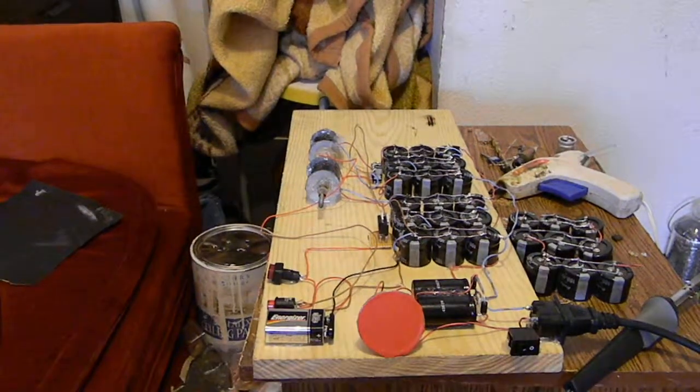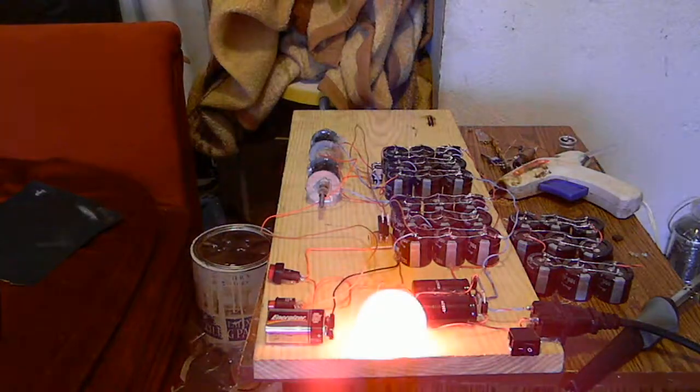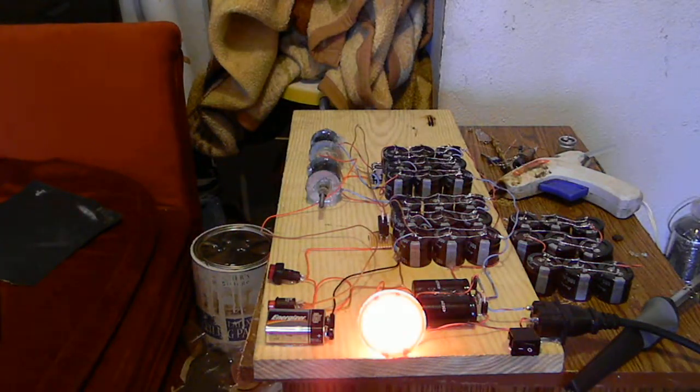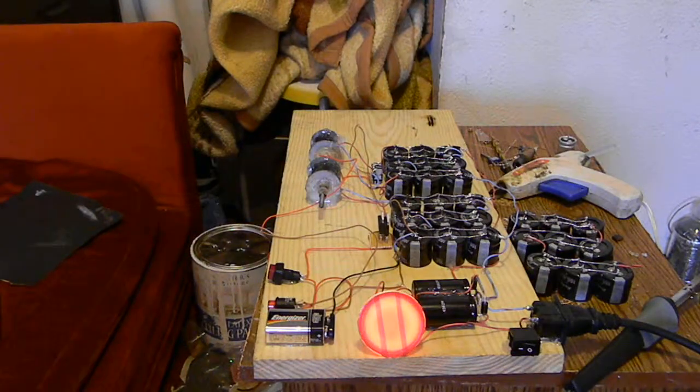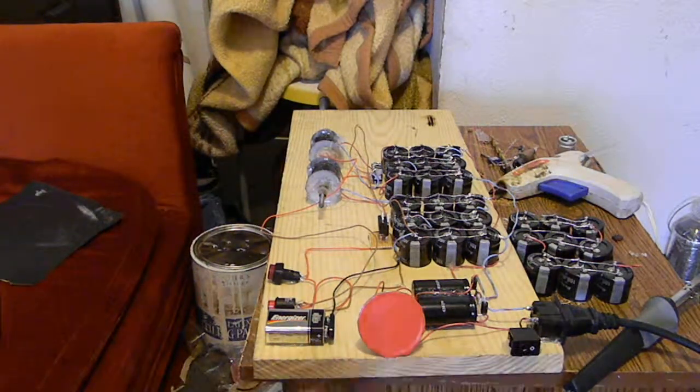So what we're going to do is we're going to charge this up by flipping this switch right here. That light will turn on. And then once that light completely turns off here, like that, we turn it off.